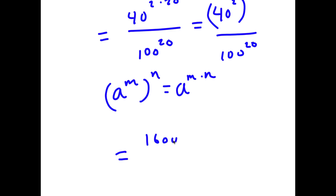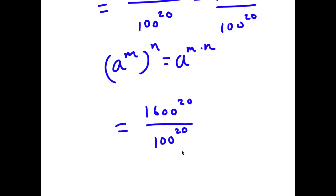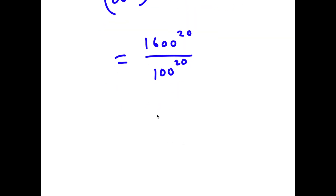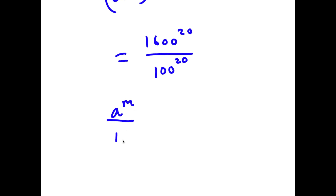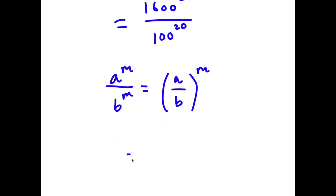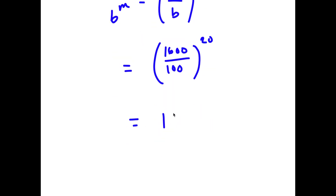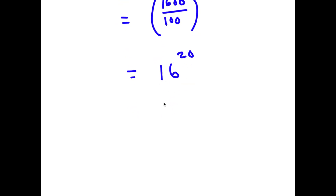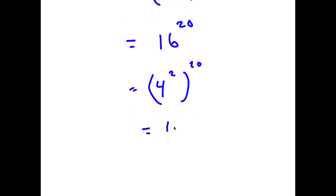So now I have 1600 to the power of 20 over 100 to the power of 20. And if I have something in the form a to the power of m over b to the power of m, this is equal to a over b to the power of m. So 1600 to the power of 20 over 100 to the power of 20 is going to be 1600 over 100 to the power of 20. And 1600 over 100 is 16, so I have 16 to the power of 20. And 16 is the same thing as 4 to the power of 2, so I have 4 to the power of 2 to the power of 20, which is 4 to the power of 40.